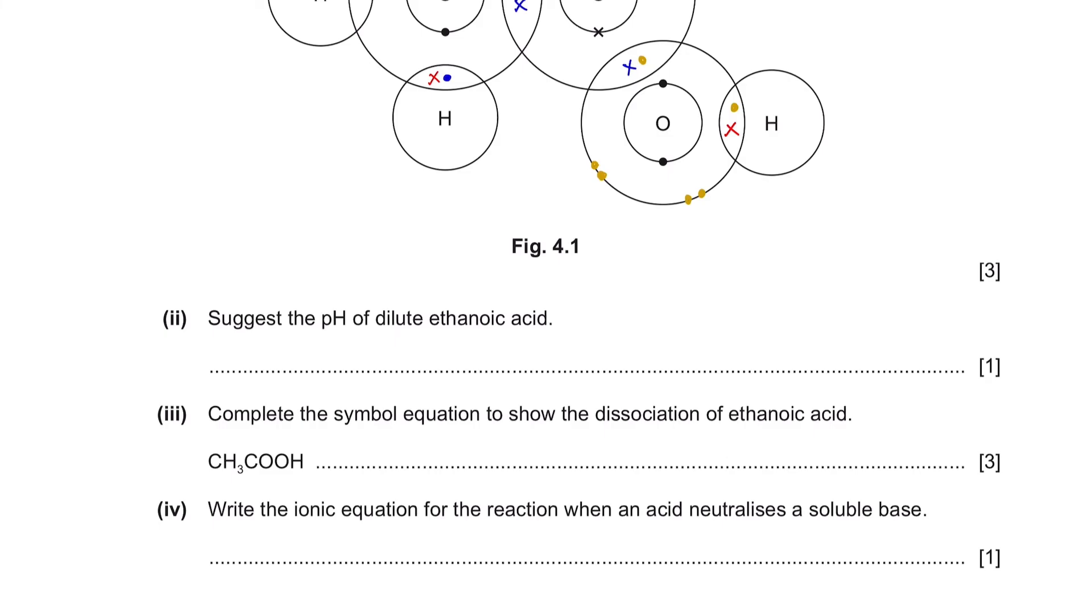Part 2: Suggest the pH of dilute ethanoic acid. Since ethanoic acid is a weak acid, your pH value could range anywhere within 3 to 6.